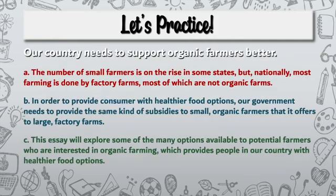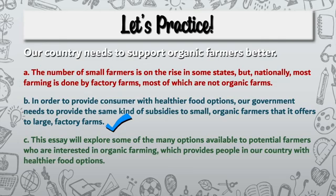Let's try another one. The prompt is: our country needs to support organic farmers better. Pause the video and choose among A, B, or C. The answer is B: in order to provide consumers with healthier food options, our government needs to provide the same kind of subsidies to small organic farmers that it offers to large factory farms.